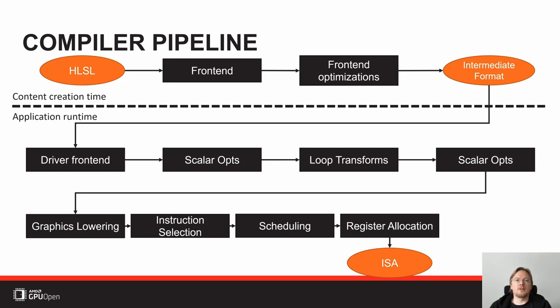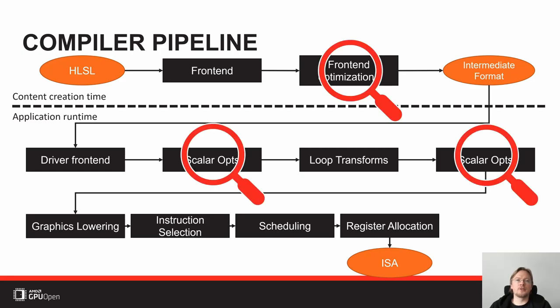The frontend is the part at the very top. If we look at the whole shader compilation pipeline, we start with high-level language source code, it goes through the frontend and some frontend optimizations, produces some kind of intermediate format, which we then pass on to the driver — the bottom half of this picture — and the driver does a ton of optimizations on it. We're just going to focus on those three parts here today.